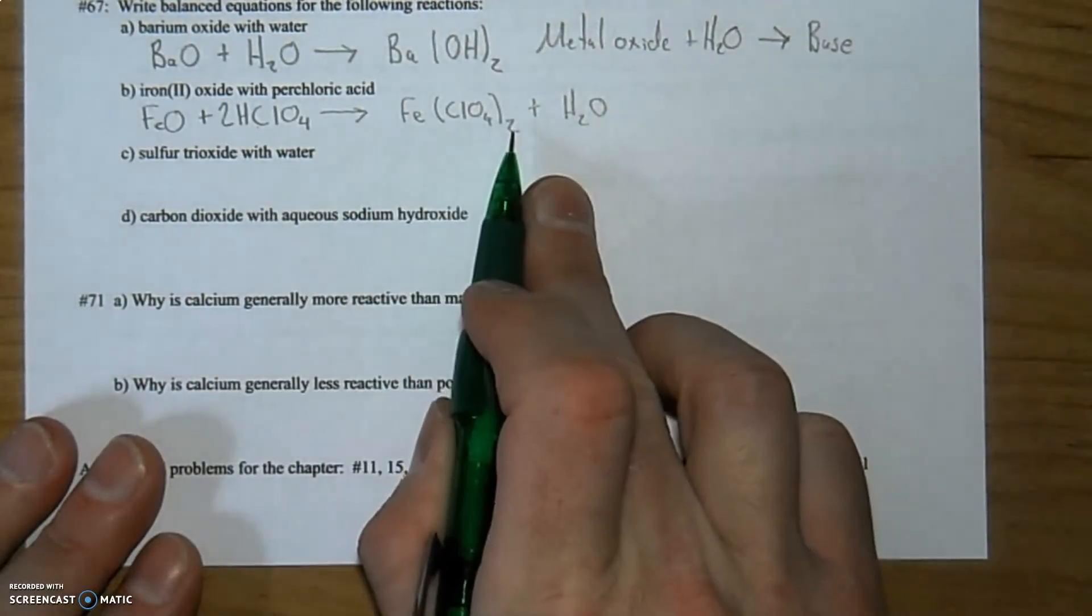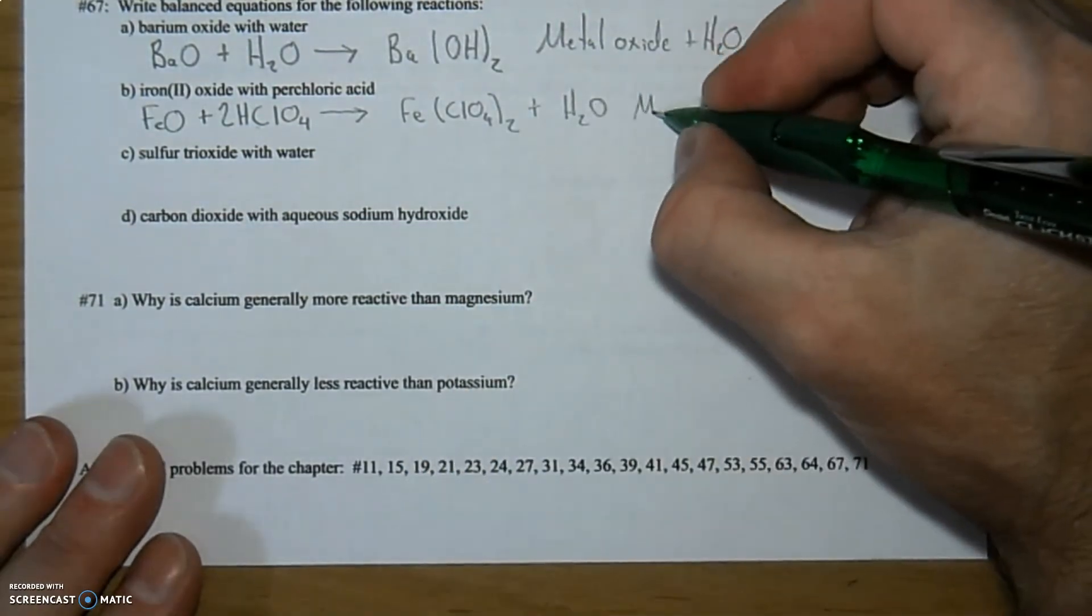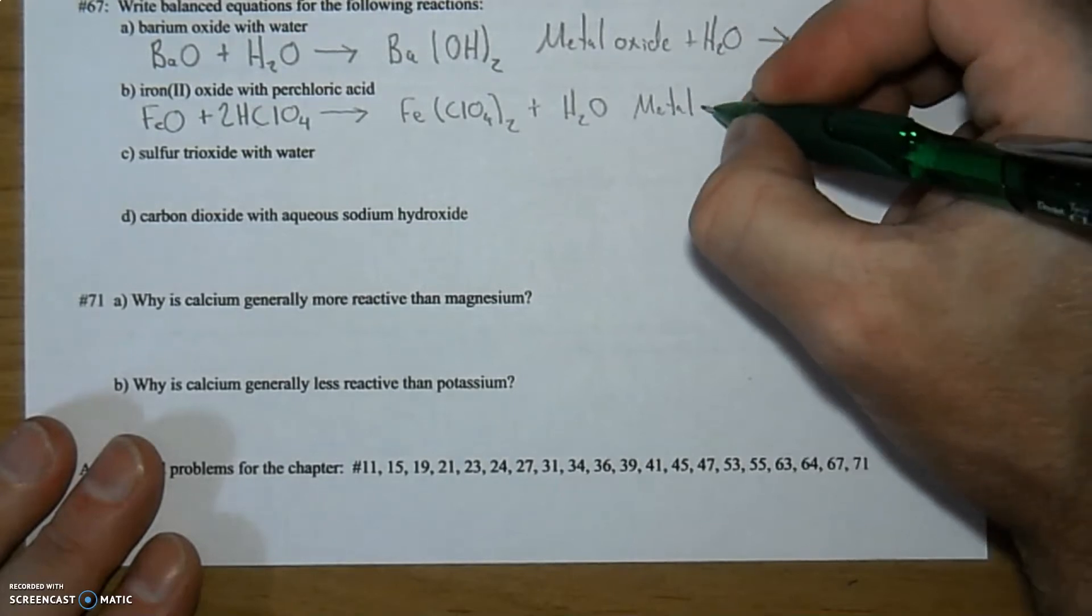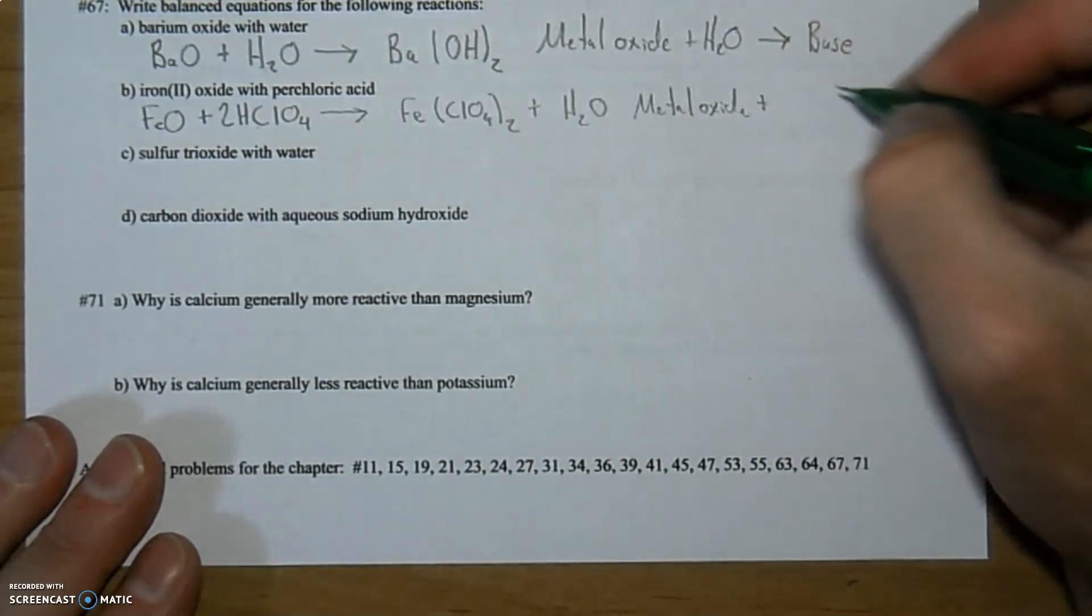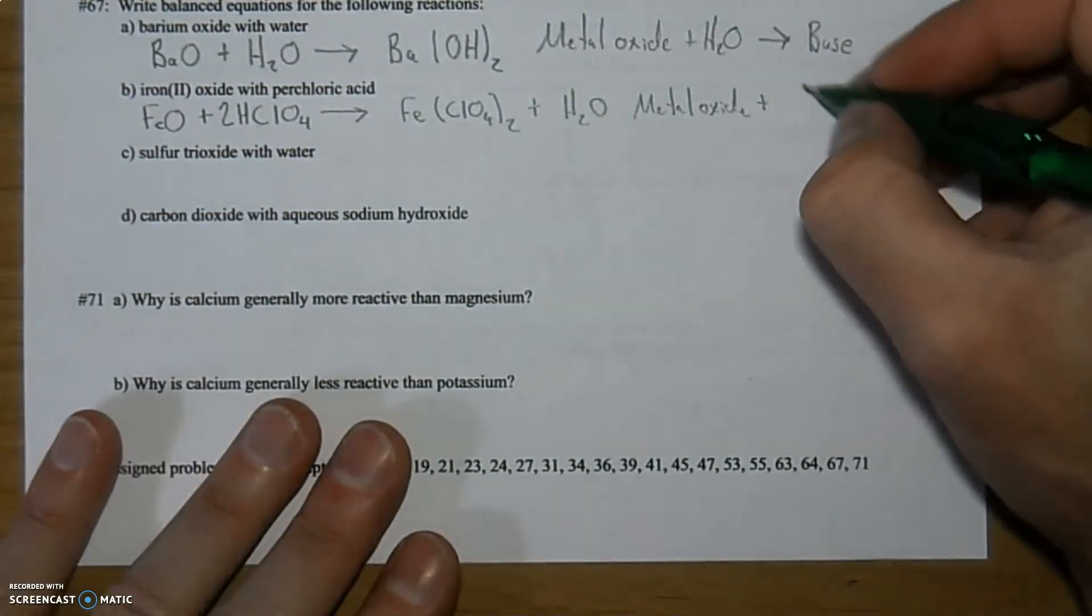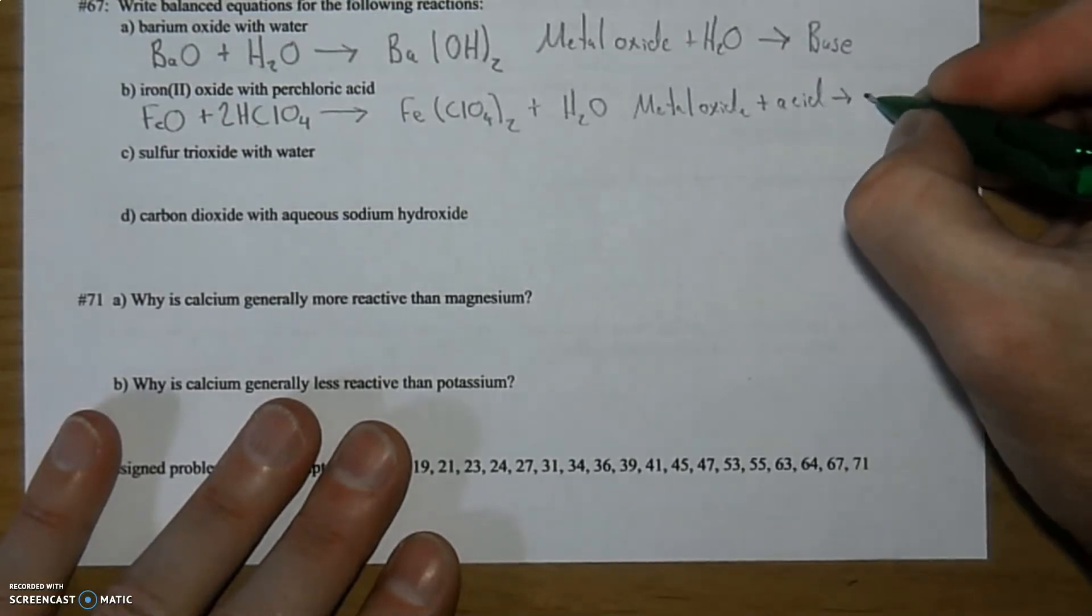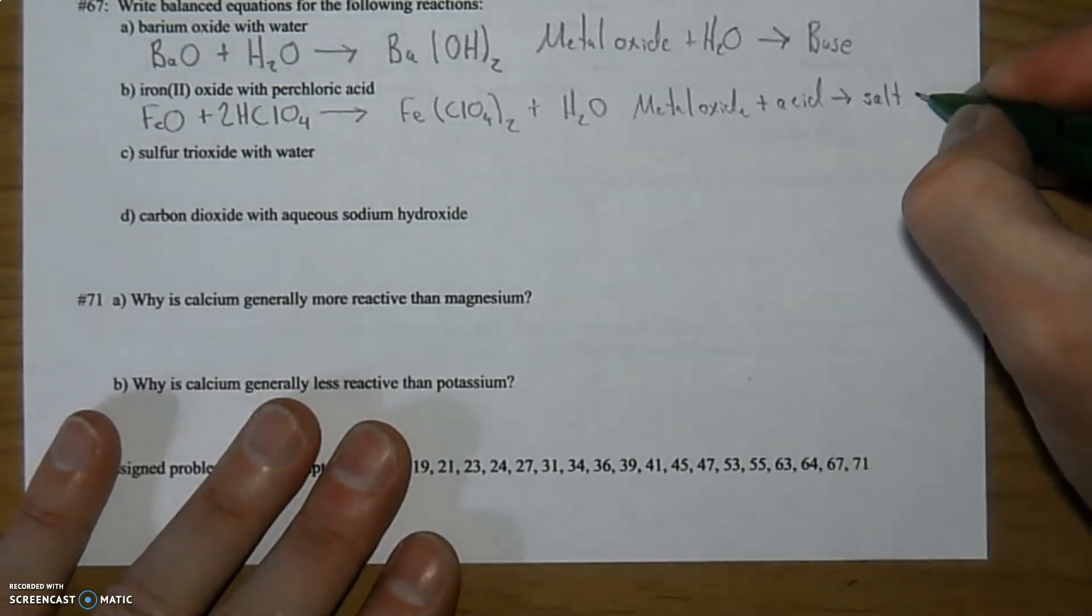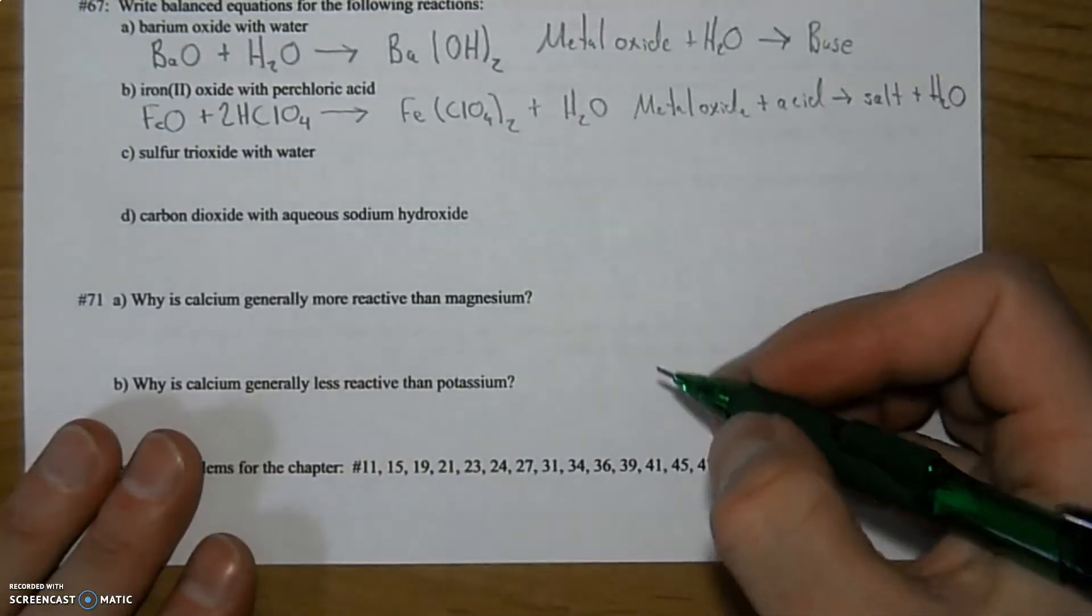And these are our products. So this is considered a salt. And this is water. So again, just to reference what we just did here, we have a metal oxide plus an acid, it's going to give us a salt and water.